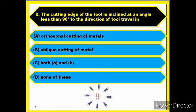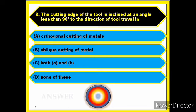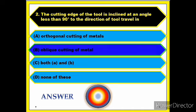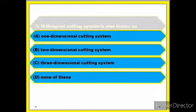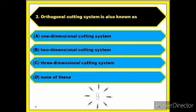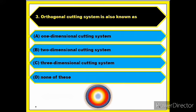Question number two: the cutting edge of the tool is inclined at an angle less than 90 degrees to the direction of tool travel. Answer: oblique cutting of metals. Question number three: orthogonal cutting system is also known as? Answer: two-dimensional cutting system.